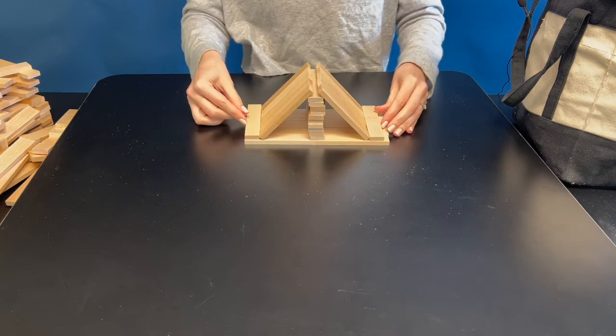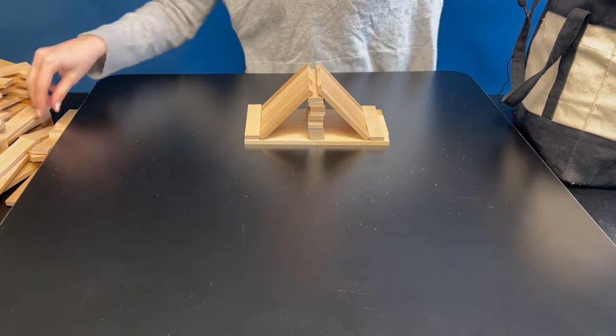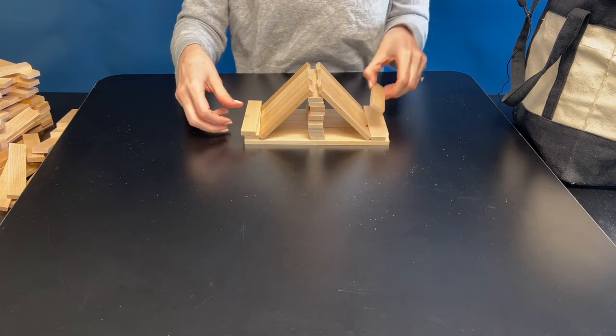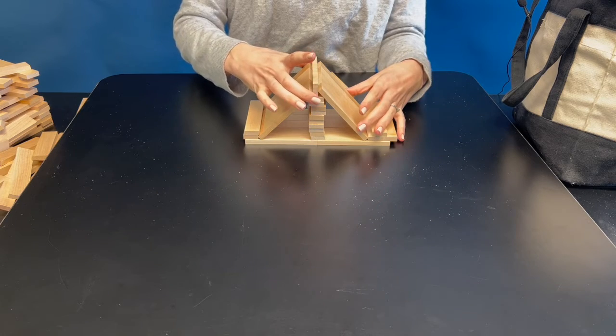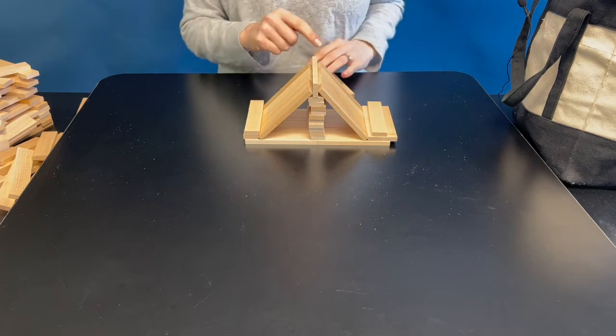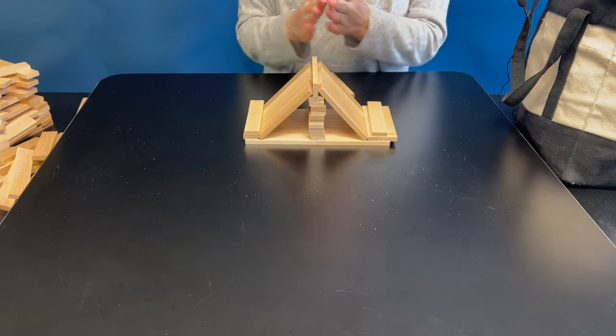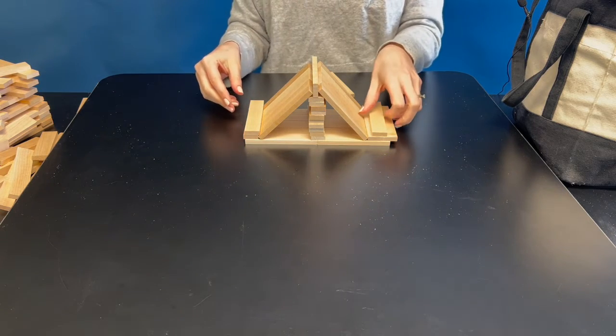If it seems like they're still sliding, you can always add some more weight. To finish off the roof, it might be nice to put one plank in the middle so it has a nice cleaner look to the top.